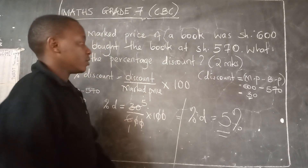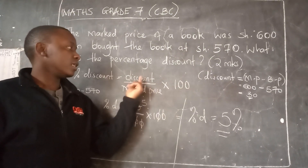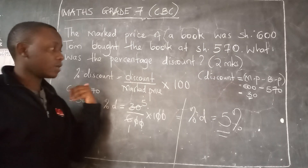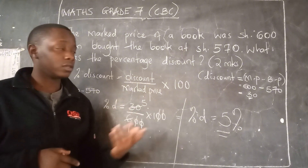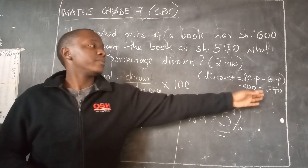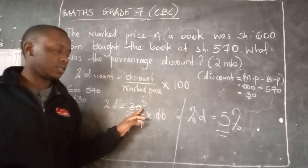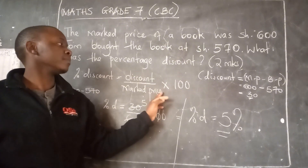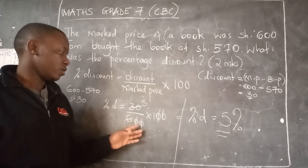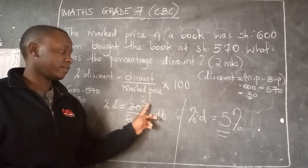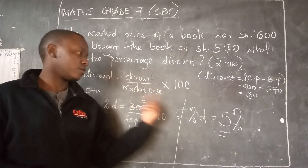And you're done. The trick is just knowing what the discount is and what the marked price is, then you multiply by 100. If you don't know the discount, you say: discount equals marked price minus the price at which the book was bought or sold. In our case, 600 minus 570 equals 30. So 30 over 600 multiplied by 100 — the zeros cancel, leaving 30 over 6, which equals 5. The percentage discount is 5%.